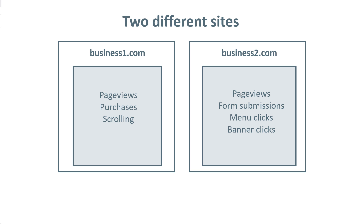When we look at these two websites, we see that different things will be tracked. For example, on business1.com they will be using just Google Analytics, while on business2.com they will be using Google Analytics, Google Ads, and Facebook Ads. Since these two websites are pretty different in terms of tracking setup, I would recommend having two different containers. I personally prefer having separate containers for different setups.